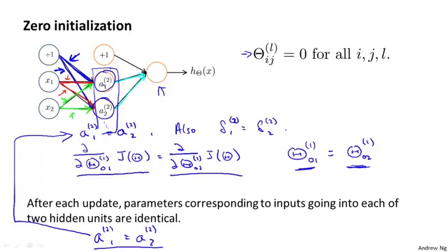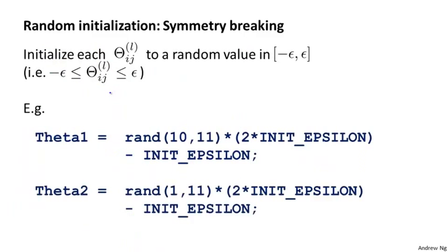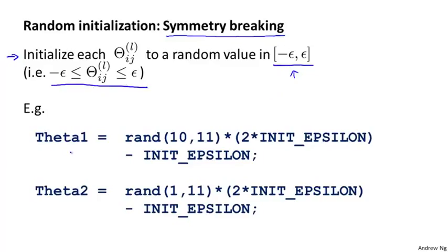In order to get around this problem, the way we initialize the parameters of a neural network is with random initialization. The problem we saw is sometimes called the problem of symmetric weights — all of the weights being the same. So random initialization is how we perform symmetry breaking. What we do is initialize each value of theta to a random number between minus epsilon and plus epsilon.